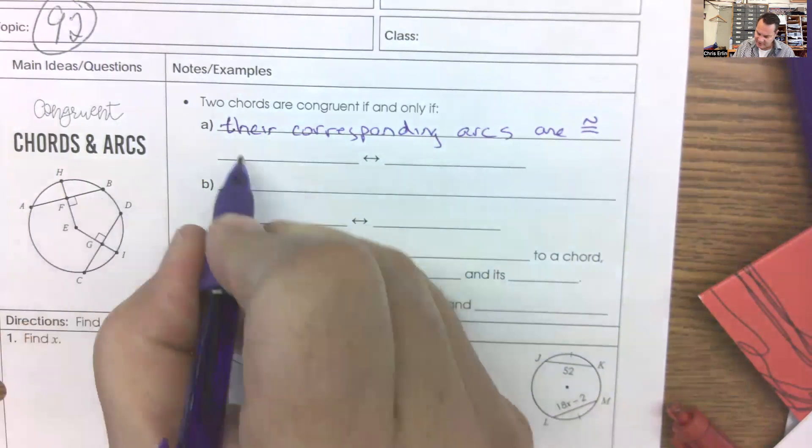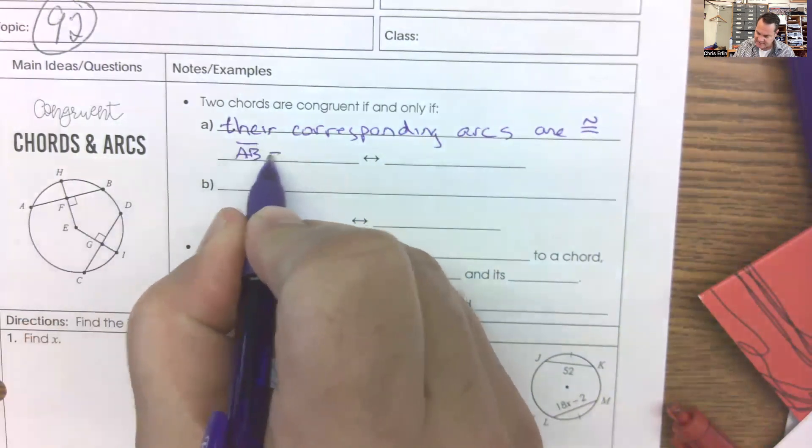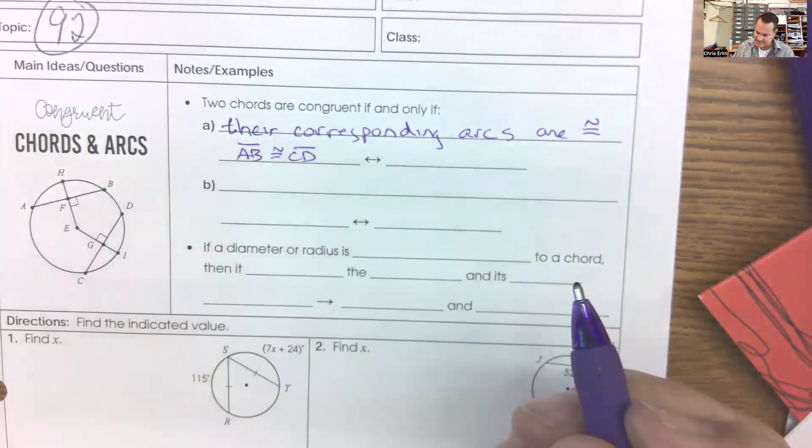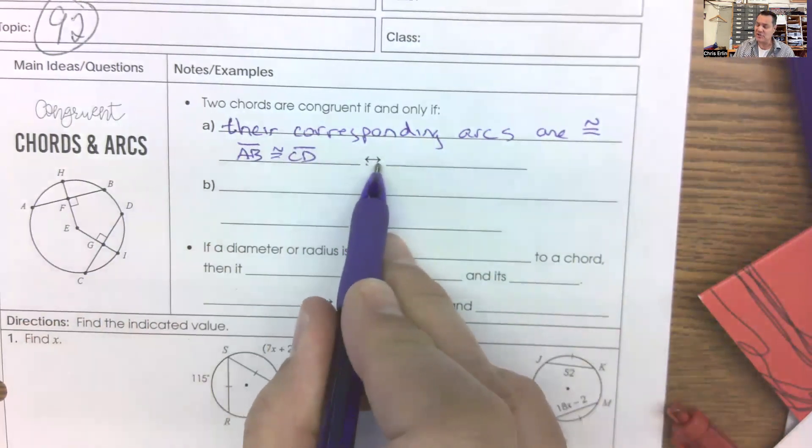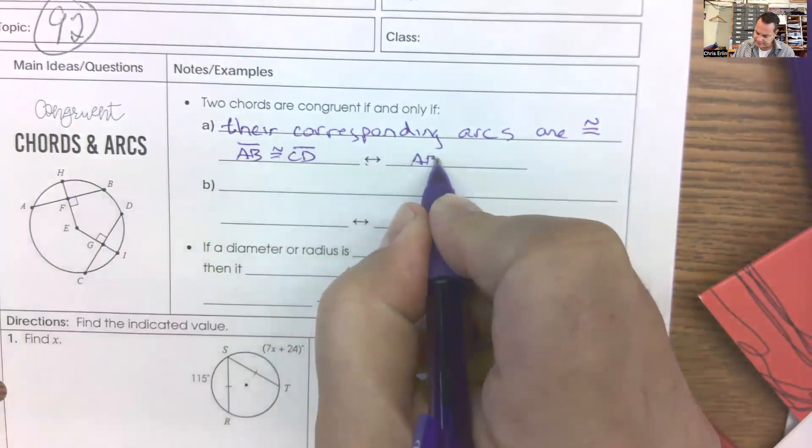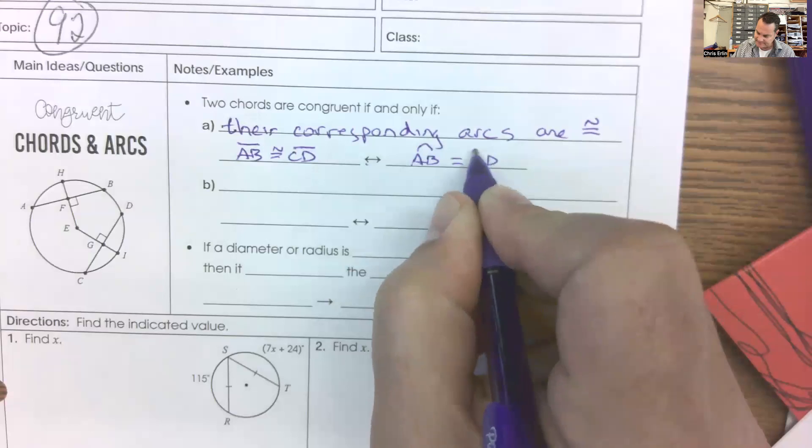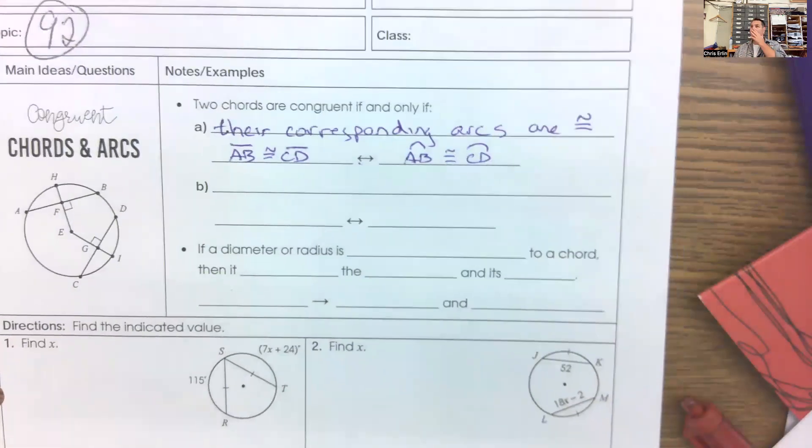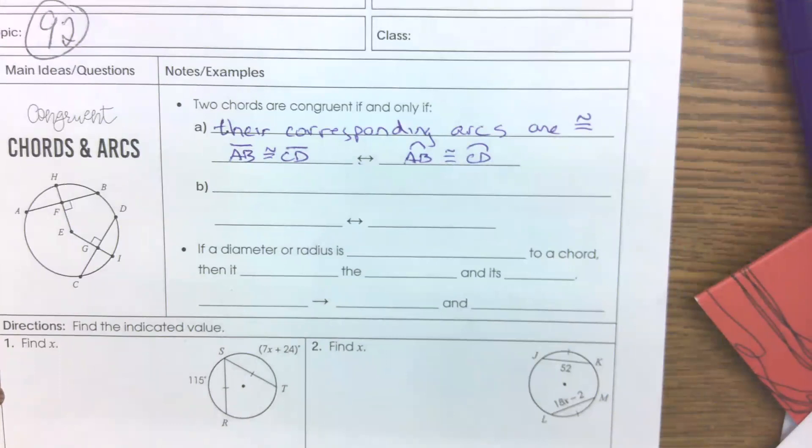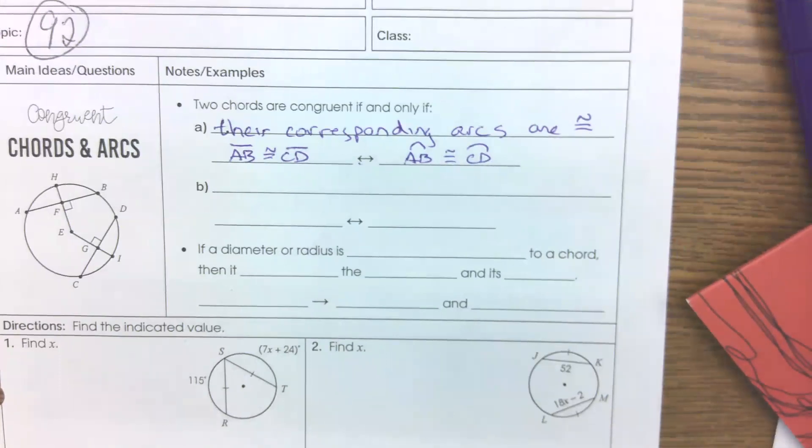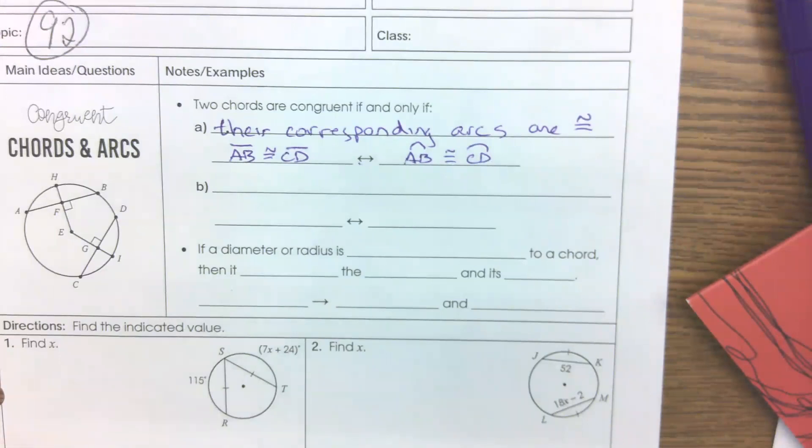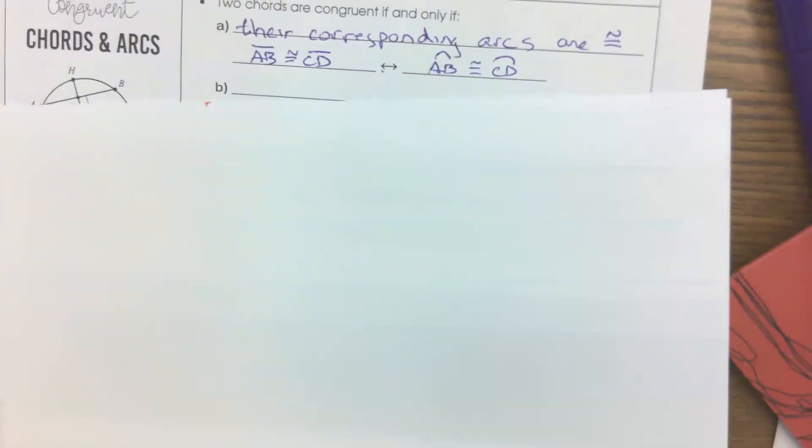two chords are congruent if and only if their corresponding arcs are congruent. In other words, if I know that AB segment is congruent to CD segment, then biconditionally, I also know that arc AB is congruent to arc CD.